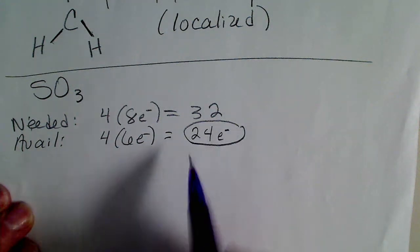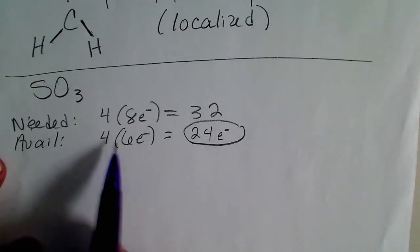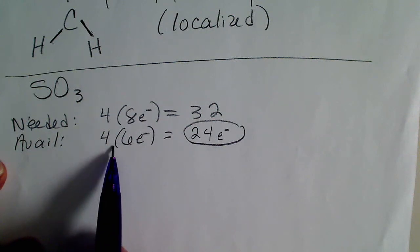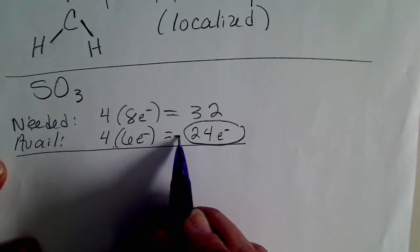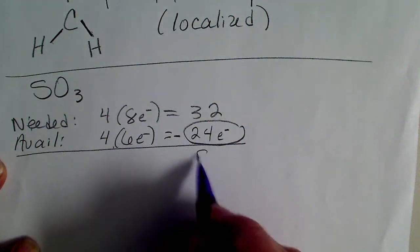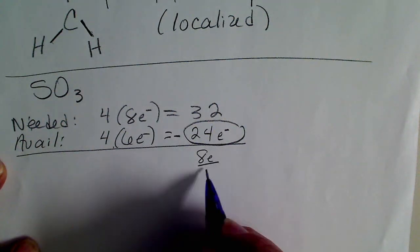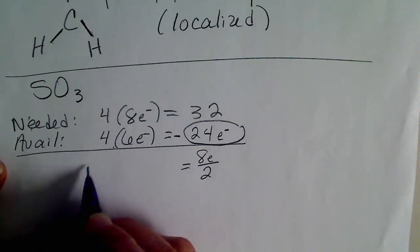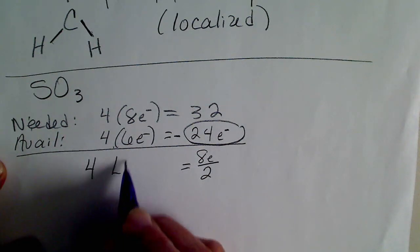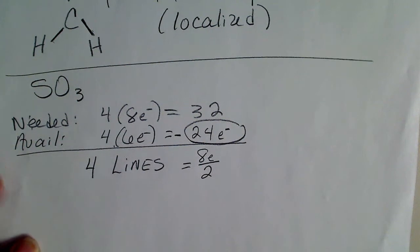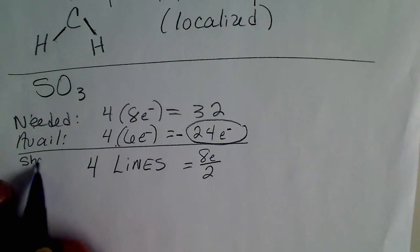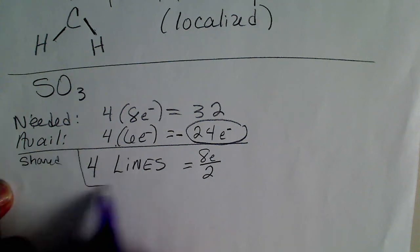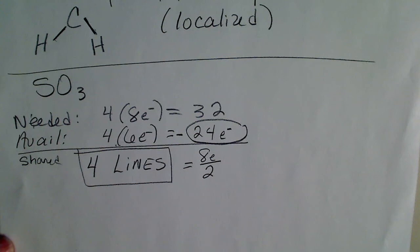That's the number that needs to be on our picture. In fact, most textbooks teach dot structures only using this number, the valence electrons from the periodic table. Here we're going to subtract: 32 minus 24 is eight electrons. We divide by two and this gives us four lines in this structure. The entire purpose of the needed available shared method is to come up with the number of lines, so we know right away whether we have double bonds or not.